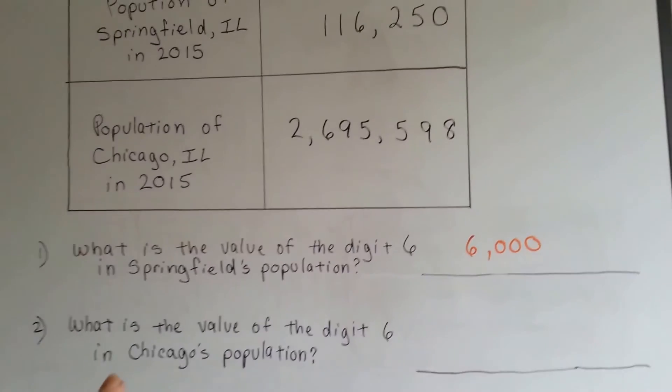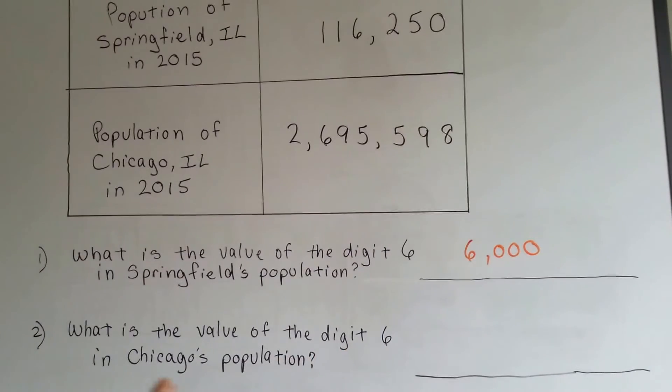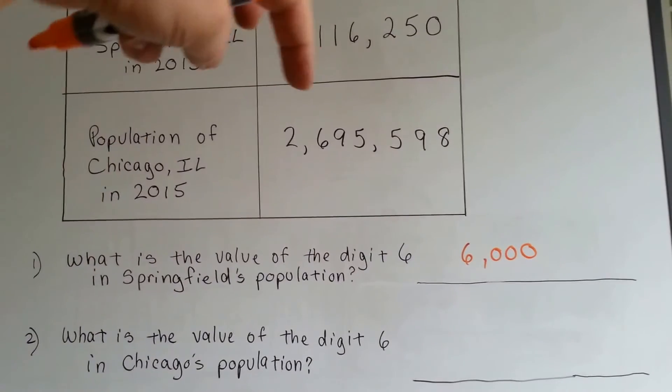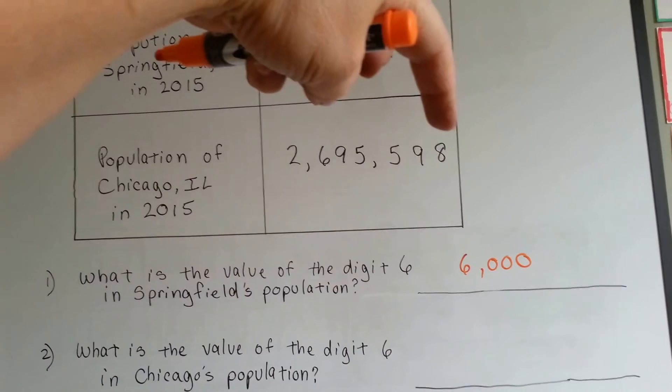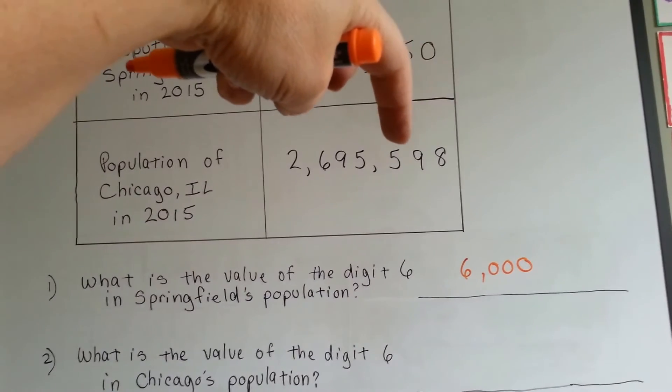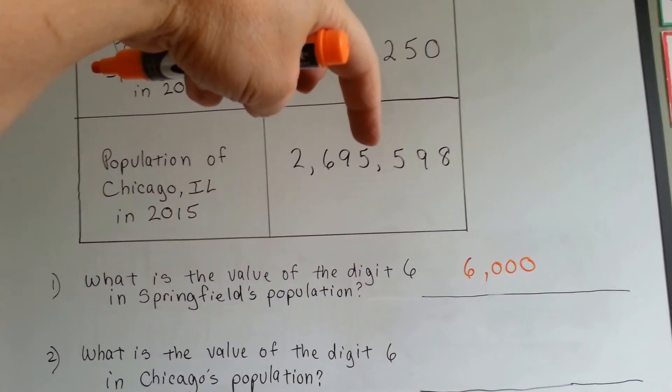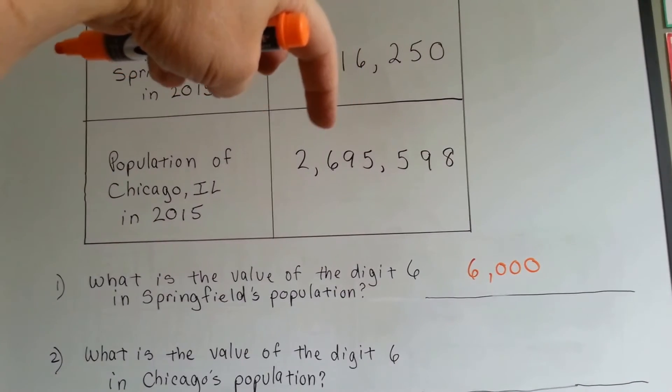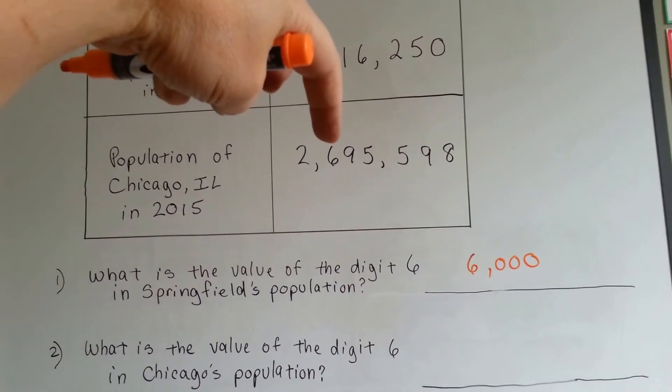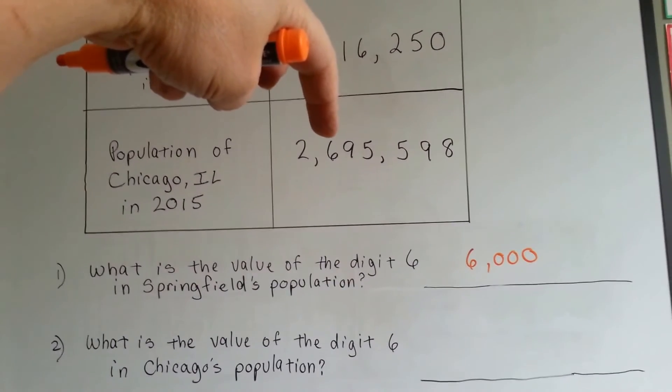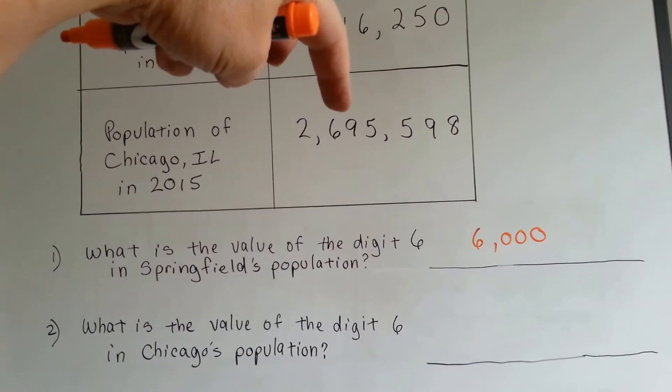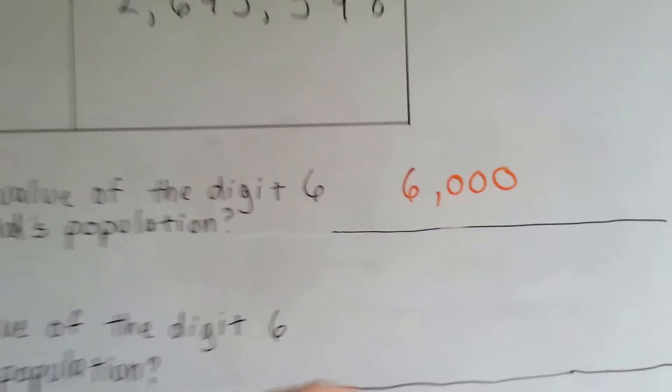What is the value of the digit 6 in Chicago's population? Ones, tens, hundreds, one thousands, ten thousands, hundred thousands. Six hundred thousand. That's the value of the digit 6. Six hundred thousand.